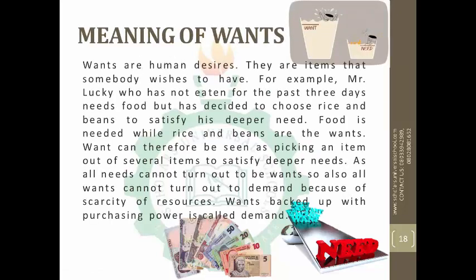Now you've understood what needs means. Wants are human desires — the items that somebody wishes to have. For example, Mr. Lucky has not eaten for the past three days, so he needs food. But he may choose rice and beans to satisfy his hunger. Someone who has not been eating for a few days might want to eat shawarma, or rice and beans, or swallow — there will be so many things they want to eat. But what he needs is food; food is the need while rice and beans are what he wants.